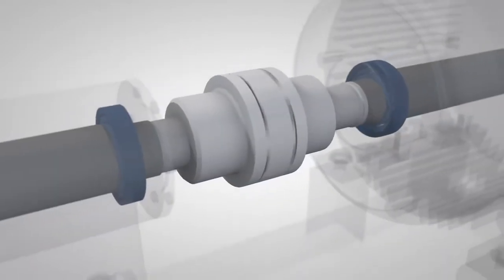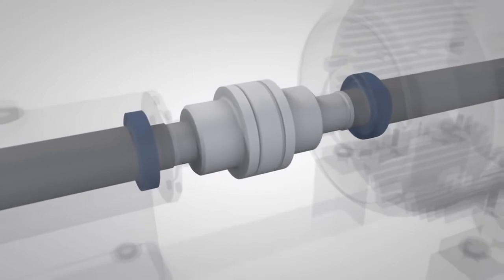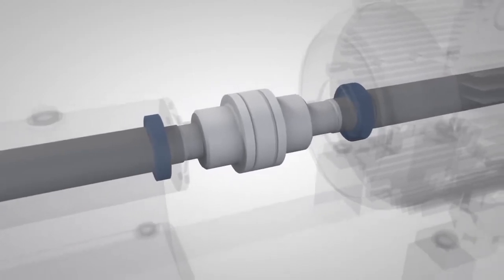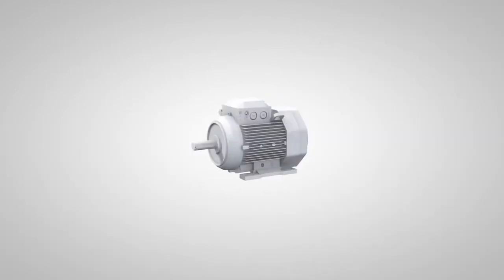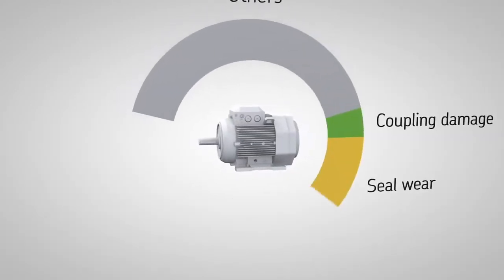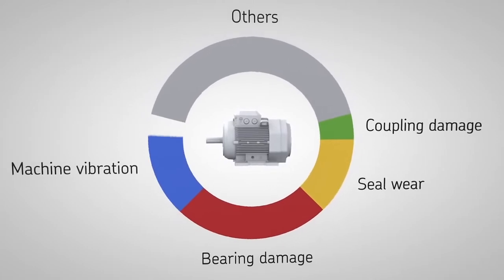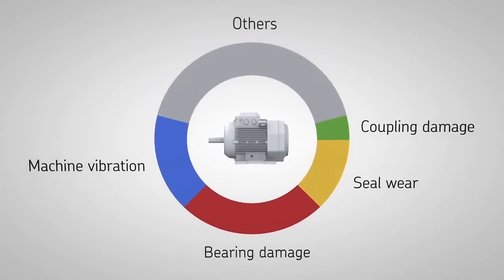Even flexible couplings that are designed to withstand minor misalignments cannot prevent negative effects on other machine components. Field experience shows that around 50% of machine breakdowns can be attributed to damage resulting from shaft misalignment.